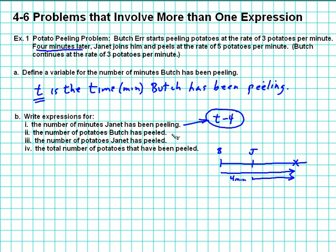Right? So it's going to be three potatoes per minute times however many minutes. And the number of minutes is t, so it's going to be 3t.